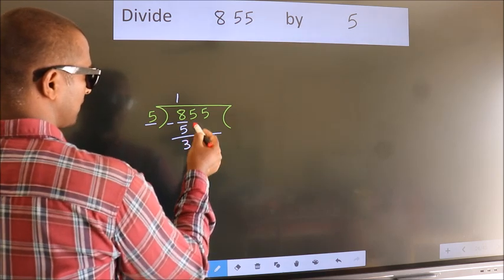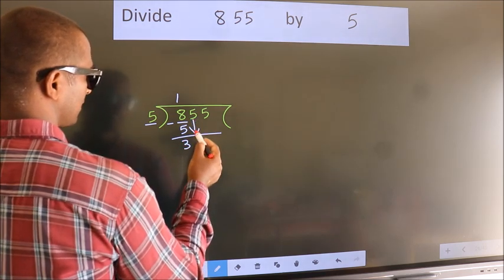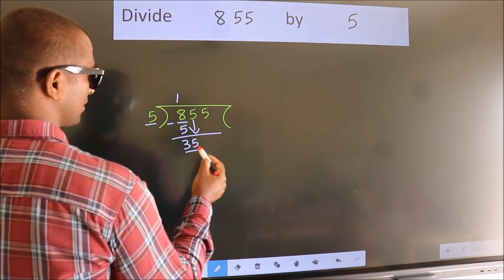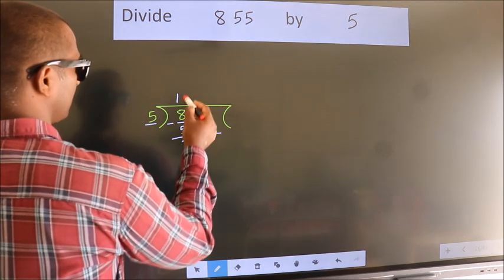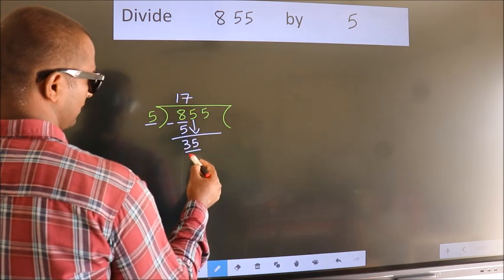After this, bring down the beside number. So, 5 down. So, 35. When do we get 35? In 5 table: 5 7s, 35.